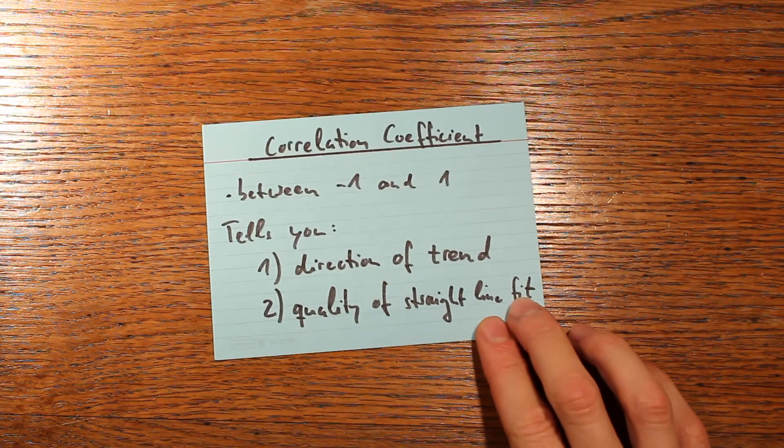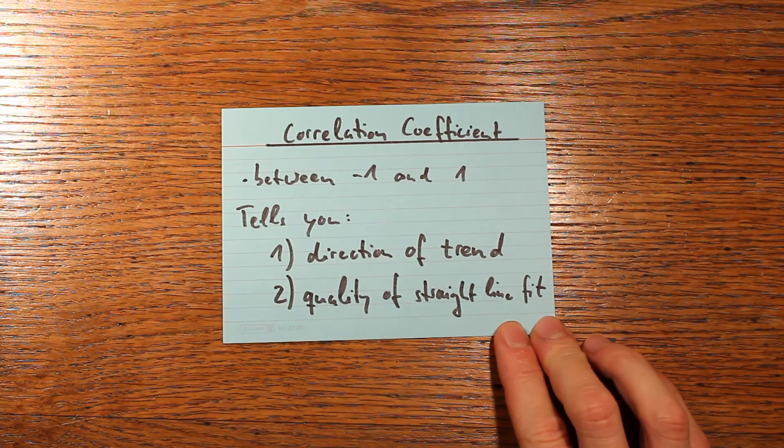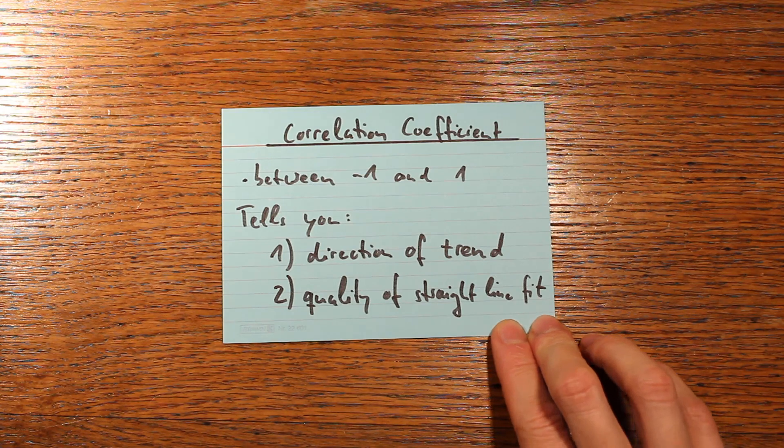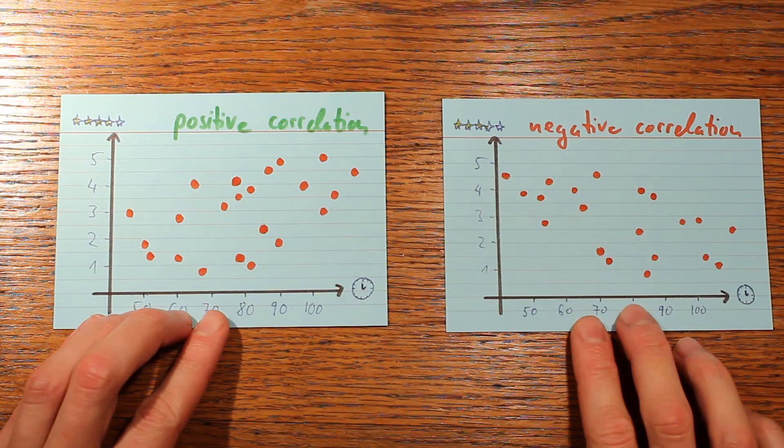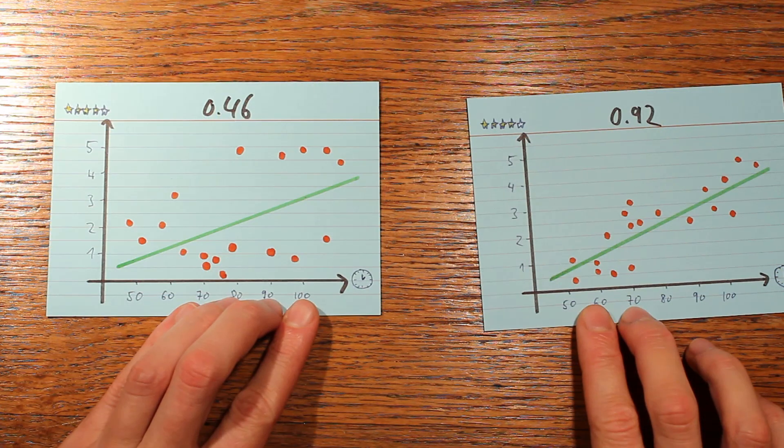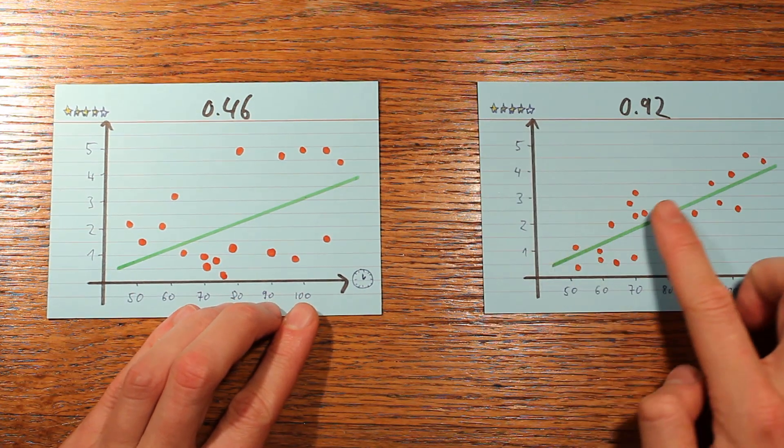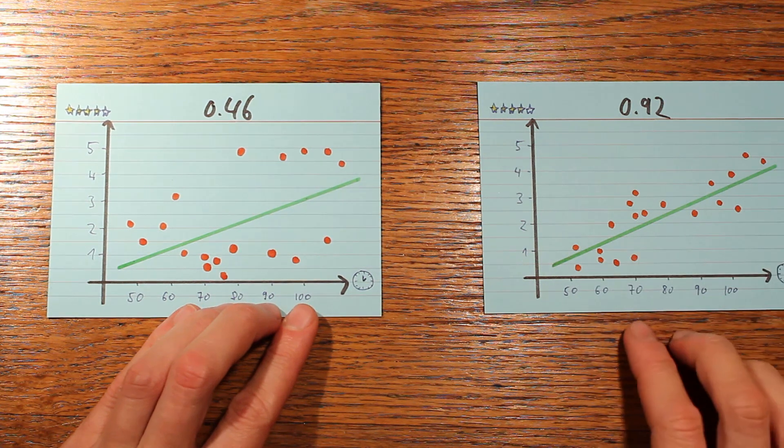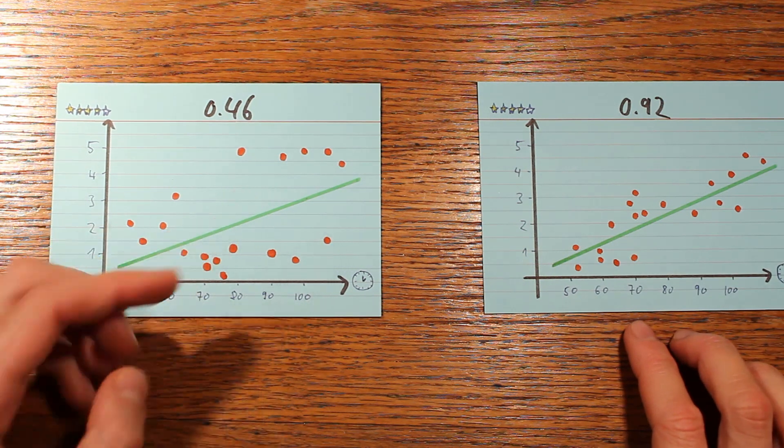To finish up, the correlation coefficient gives you a summary of the overall trend in a scatter plot in a single number between minus one and one. Its sign tells you if the trend is upward or downwards, and its magnitude tells you if your data lies tight around a straight line. In that case, the magnitude is large, or if it scatters a lot, and then the magnitude is small.